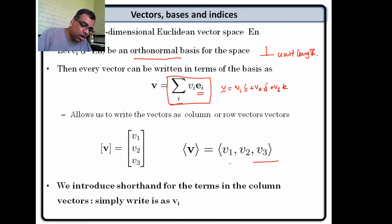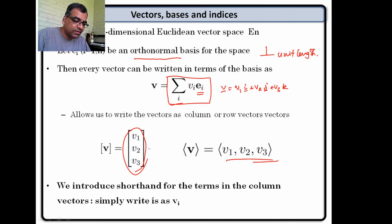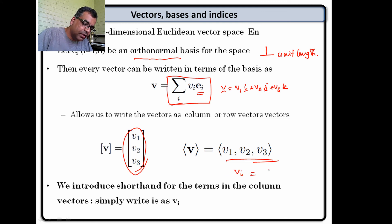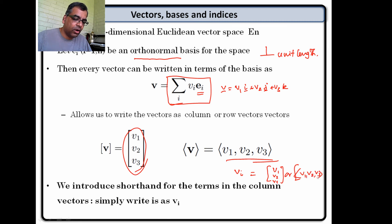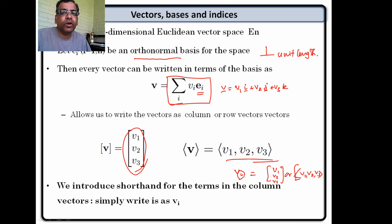We do not want to go on writing all three components. Instead, I just want to write it as v_i. v_i means either v1, v2, v3 as a column vector or as a row vector. The index i tells you which element, and the value for i may go from 1, 2, 3 or 1, 2, 3, 4, 5, 6 or whatever we like. That is how it works.